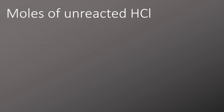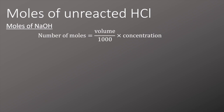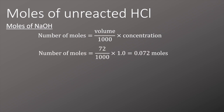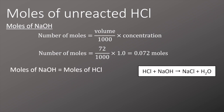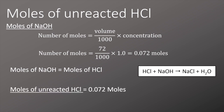We'll start by working out the number of moles of unreacted hydrochloric acid. To do this we'll look at the moles of sodium hydroxide using the titration and use the equation: moles = volume ÷ 1000 × concentration. Plugging the numbers in, we calculate 0.072 moles of sodium hydroxide. Since the moles of sodium hydroxide equals the moles of hydrochloric acid from the reacting equation, the number of moles of unreacted hydrochloric acid is 0.072 moles.